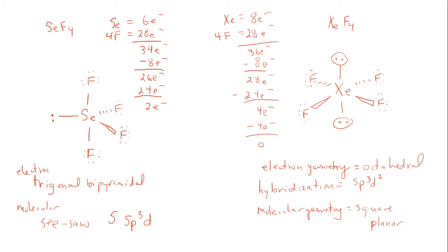To summarize the process: first, determine how many valence electrons you have; second, draw the Lewis structure; third, count electron domains to get electron domain geometry; fourth, find the hybridization; and finally, identify the molecular geometry by looking at bonding interactions only. These two examples — selenium tetrafluoride and xenon tetrafluoride — illustrate how to work through these types of problems.